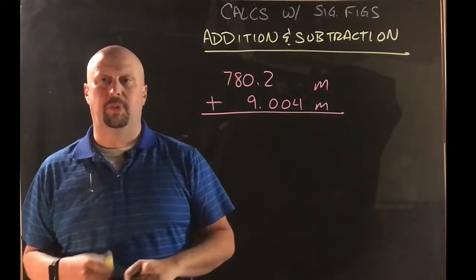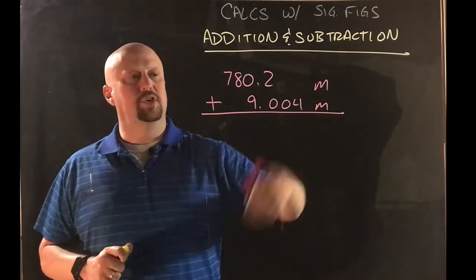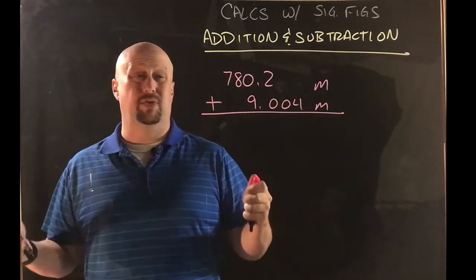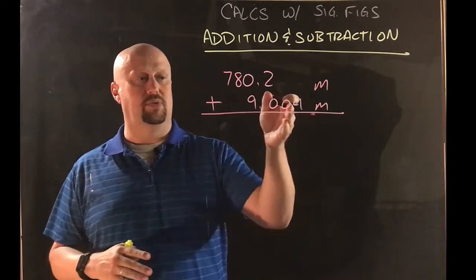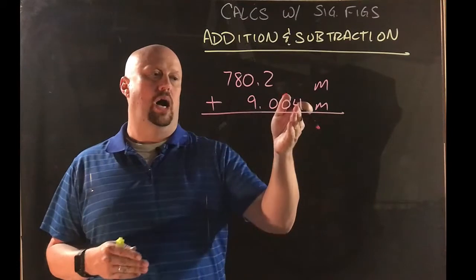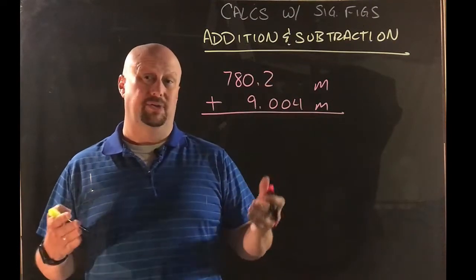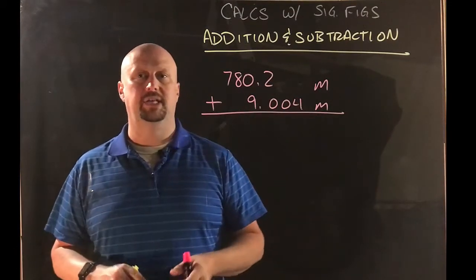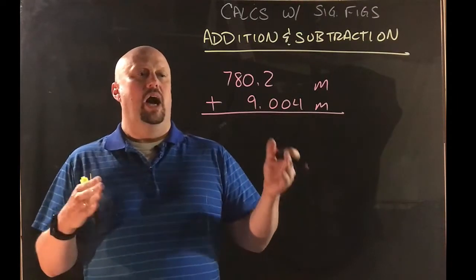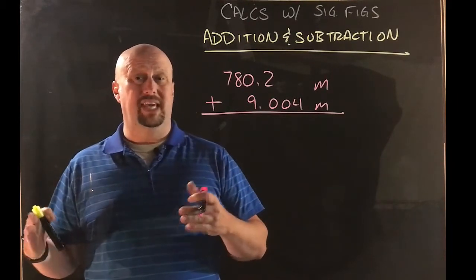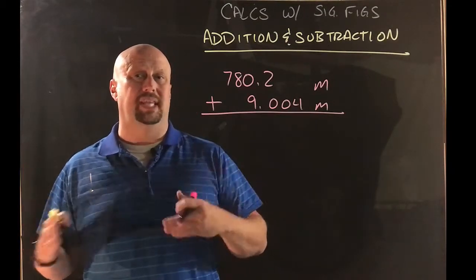Okay, so here's our problem: 780.2 meters plus 9.004 meters. Obviously these two measurements were taken with different measuring devices. This one was accurate down to a millimeter, this one was only accurate down to a decimeter. So two different things. Now that matters, because when we round to sig figs at the end, we have to worry about what was the least precise measurement.